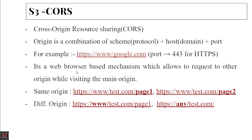CORS is a web browser-based mechanism which allows requests to other origins while visiting the main origin. For example, we are on our main origin accessing index.html, and from that page we request images from another origin. We'll see this same example in our hands-on project, and look at the difference between same origin and different origin.